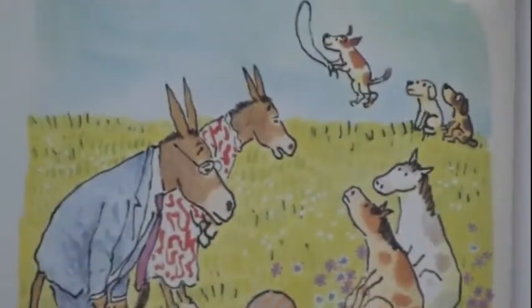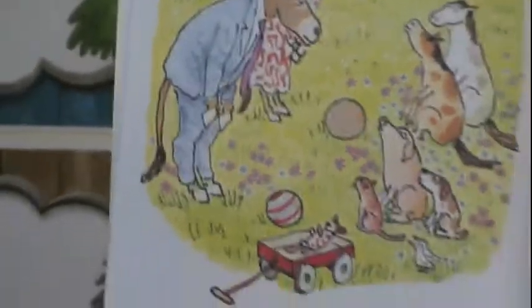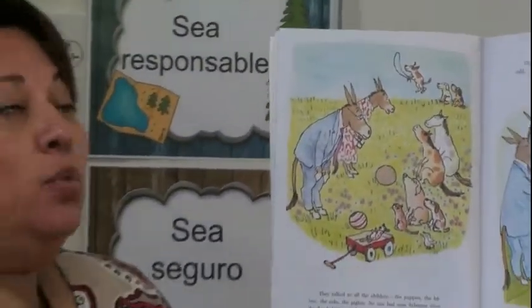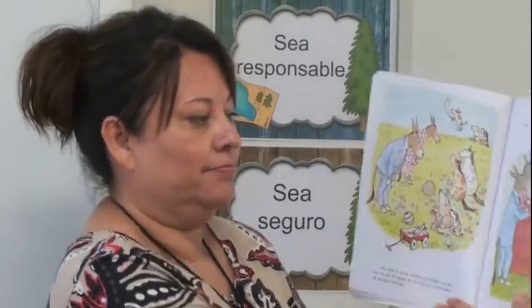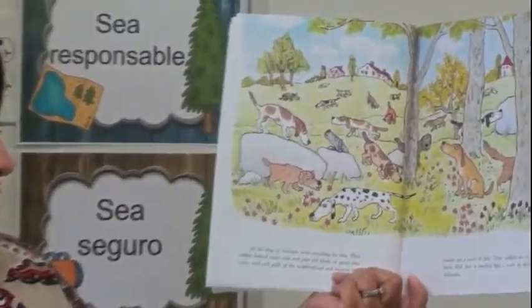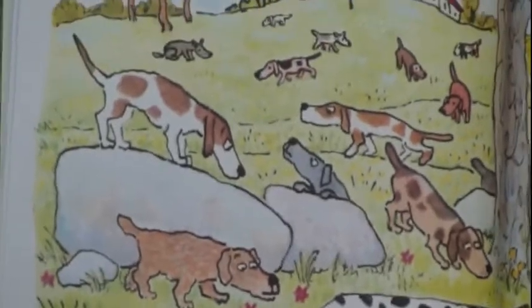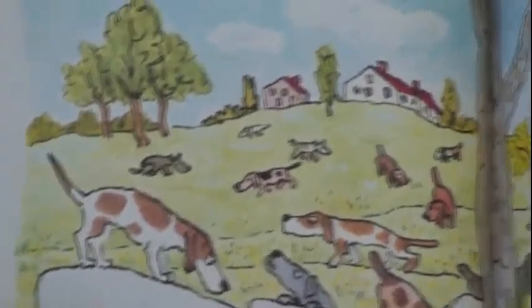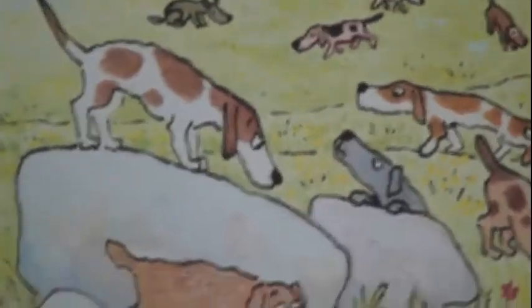They talked to all the children — the puppies, the kittens, the colts, the piglets. No one had seen Sylvester since the day before yesterday. They went to the police, but the police could not find their child. And all the dogs in Oaksdale went searching for him. They sniffed behind every rock and tree and blade of grass, into every nook and gully of the neighborhood and beyond, but found not a scent of him. They sniffed the rock on Strawberry Hill, but it smelled like a rock — it didn't smell like Sylvester. So they were out looking for him, even out there.